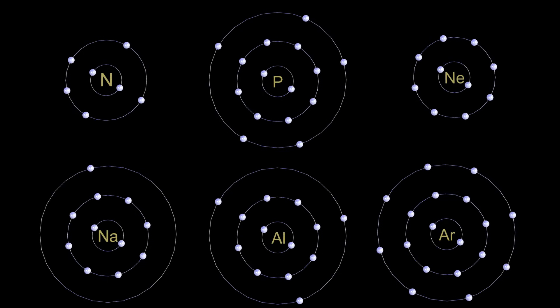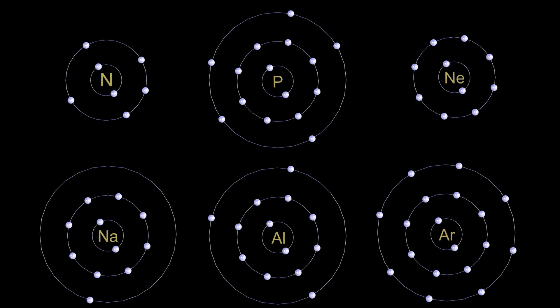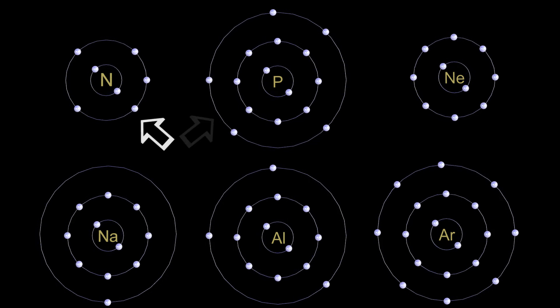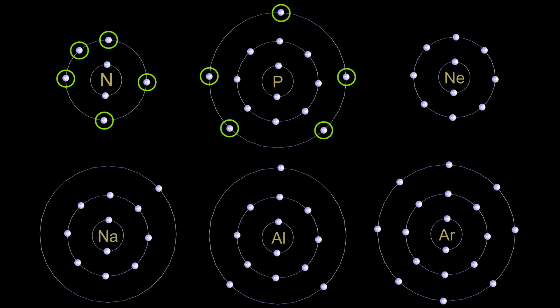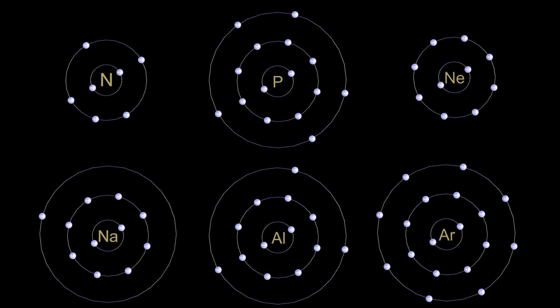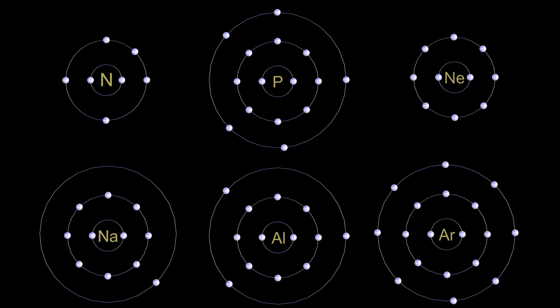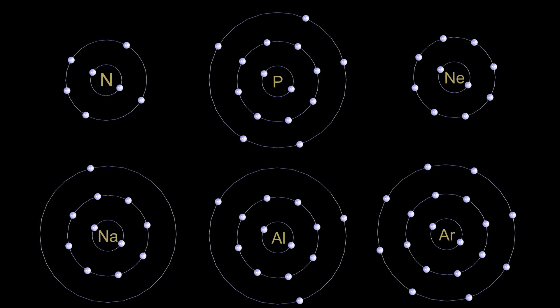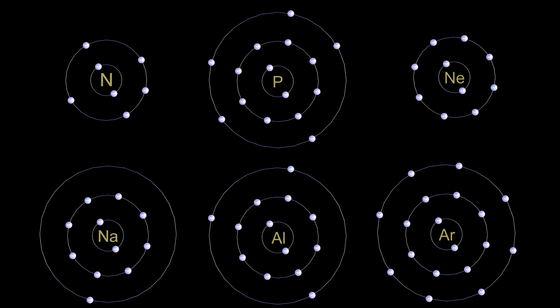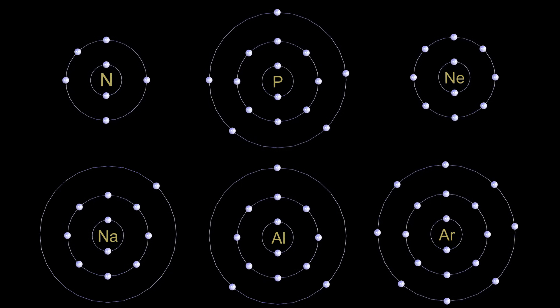In all atoms, the atom becomes stable when the outermost shell is filled with electrons. So if you look at nitrogen and phosphorus, they each have five electrons in their outermost shell. For both nitrogen and phosphorus to become stable, they will need to steal three electrons from another atom to bring them to a grand total of eight electrons in their outermost shell.